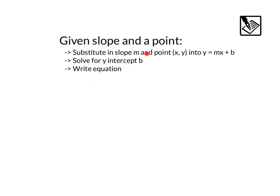So, when we're given a slope and a point of a line, we want to substitute in the slope m and the point x, y into y equals mx plus b. From there, we can solve for the y intercept b. And finally, using the slope and the y intercept, write our equation.